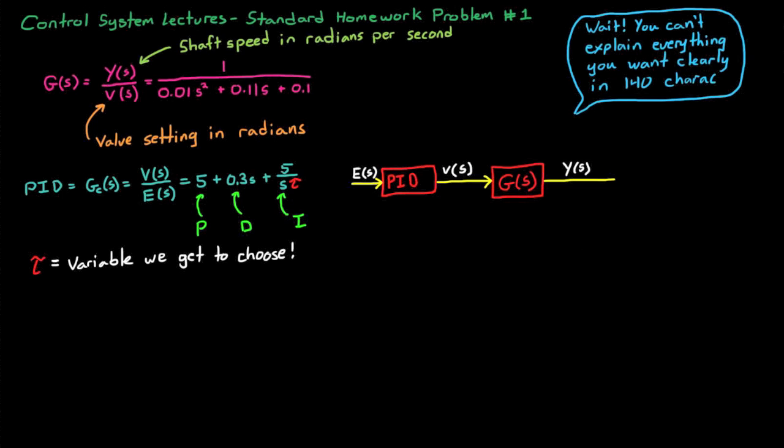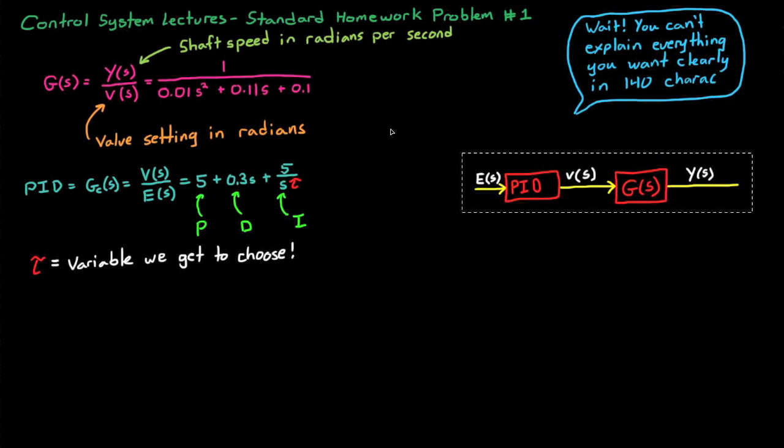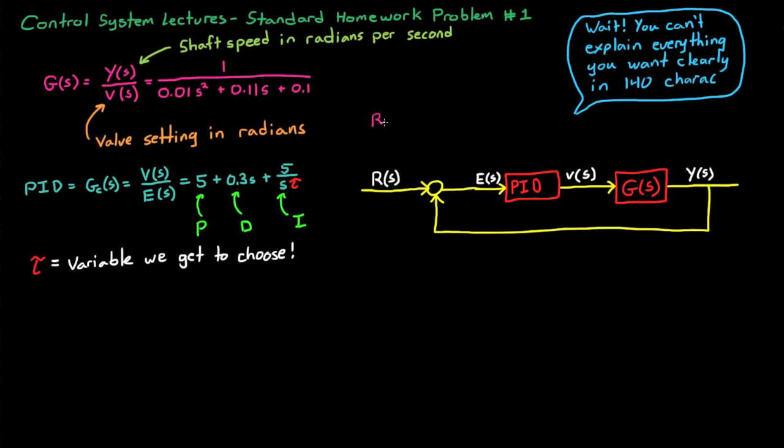Let me draw the complete feedback control system block diagram, but I didn't give myself enough room so I'm going to move this over first. This is what the system looks like. The input into the control system is our reference shaft speed. This is the speed that we want our diesel engine to drive the shaft at. We compare that speed against the measured speed to generate an error term. We feed that error term through our PID controller to generate a valve angle, which in turn affects the shaft speed of the diesel engine.